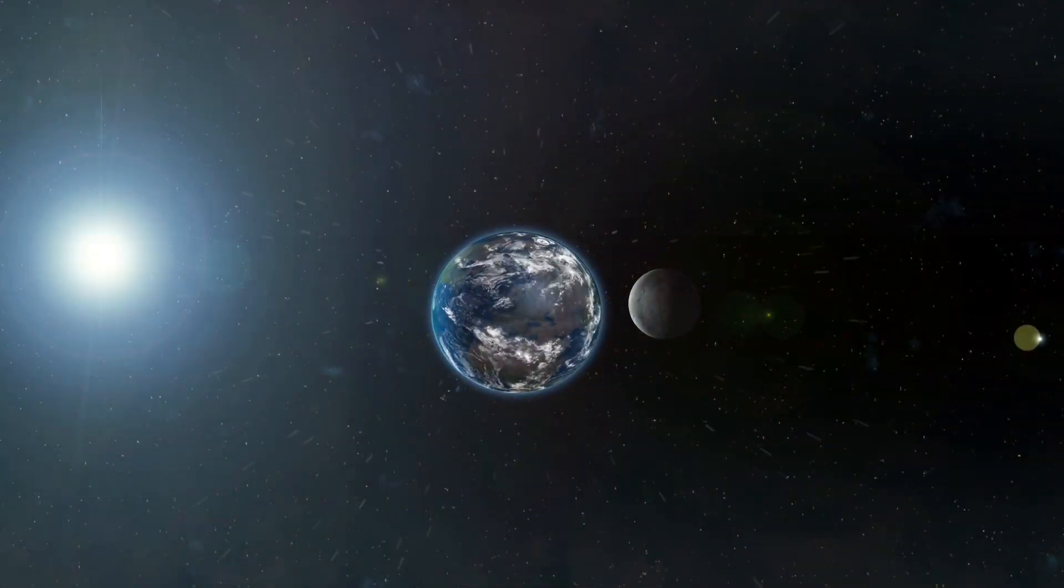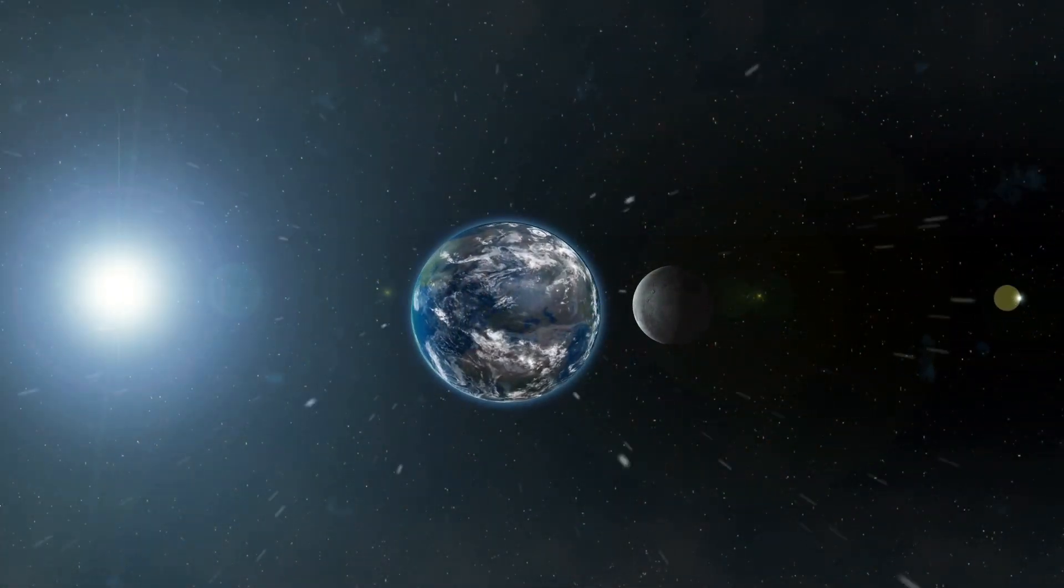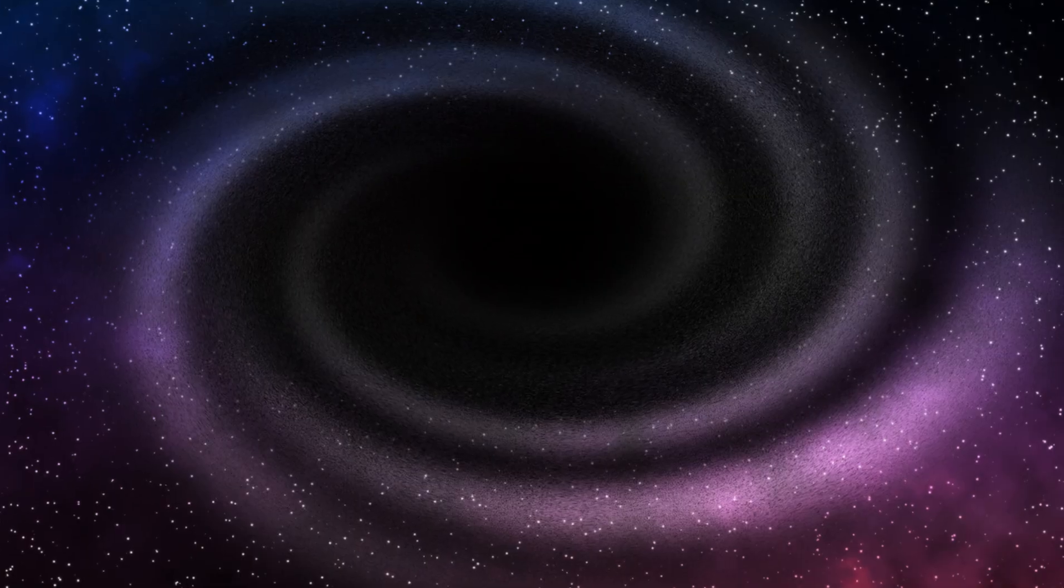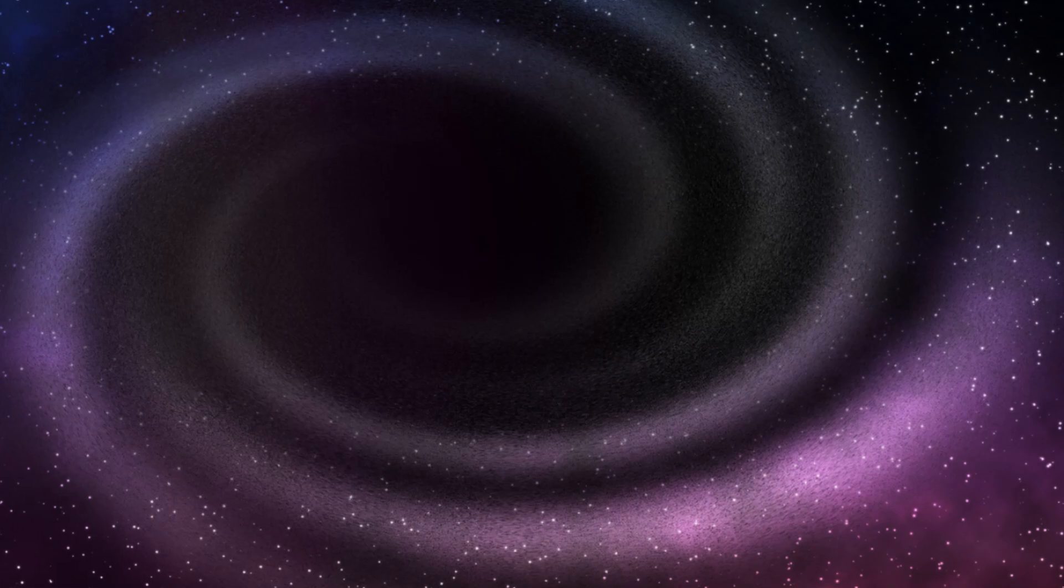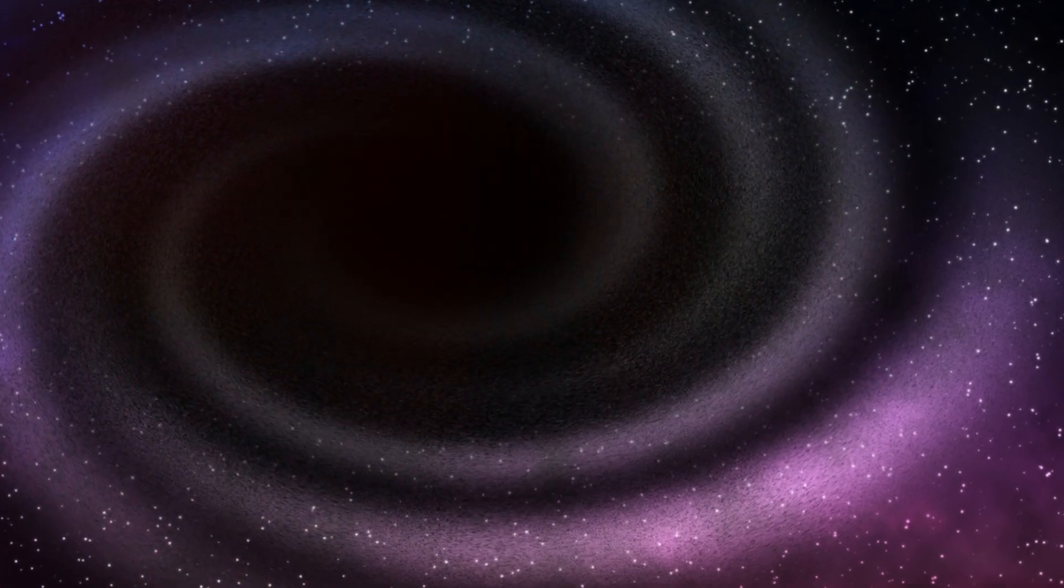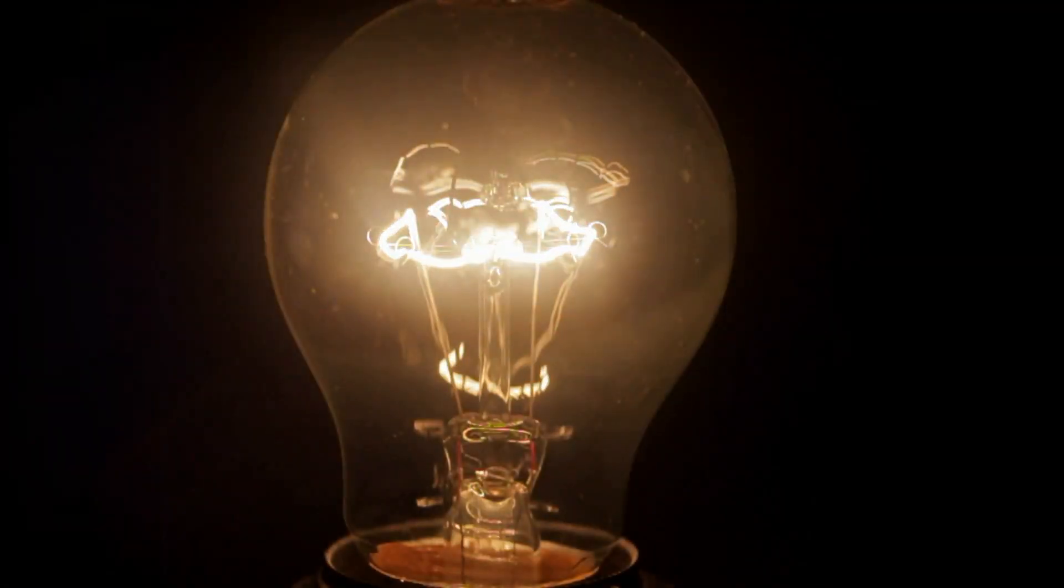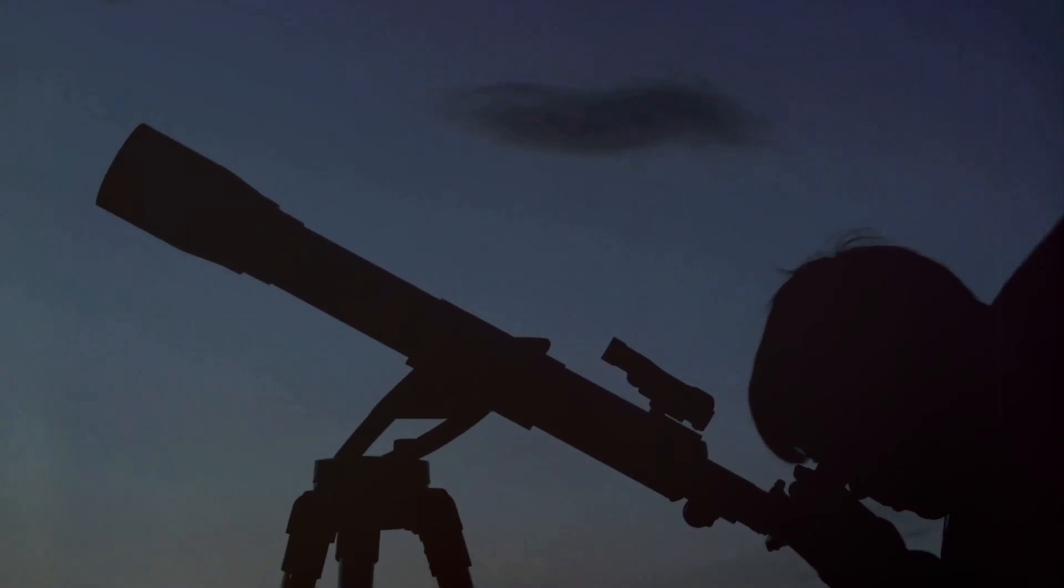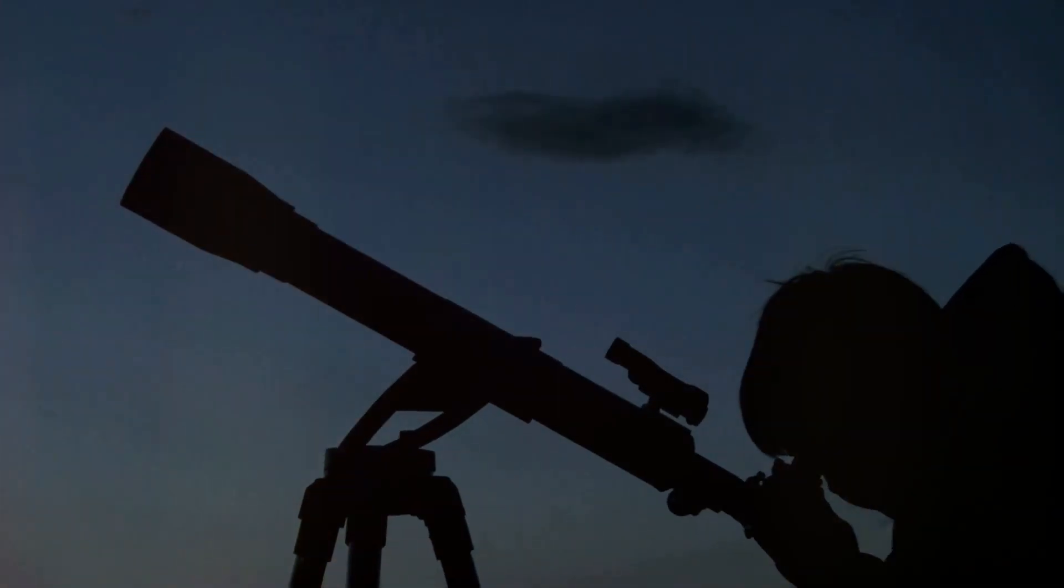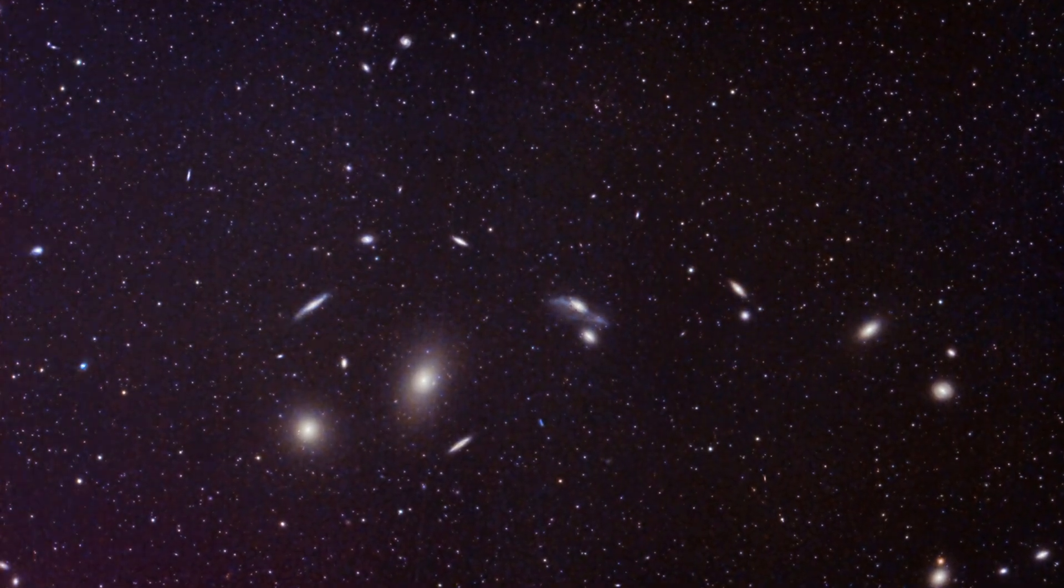So, how vast are we talking? Imagine a sphere with Earth at the center. This sphere extends in all directions for about 93 billion light-years. That's the estimated size of the observable universe. Now, a light-year is the distance that light, the fastest thing in the universe, travels in one year. It's about 6 trillion miles. Multiply that by 93 billion, and you start to get an idea of just how immense the observable universe is.